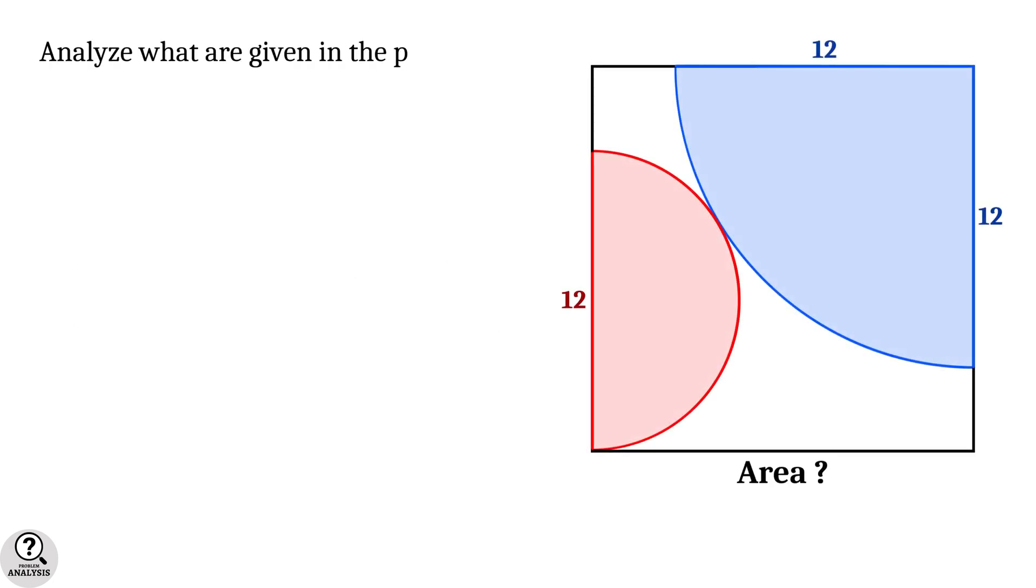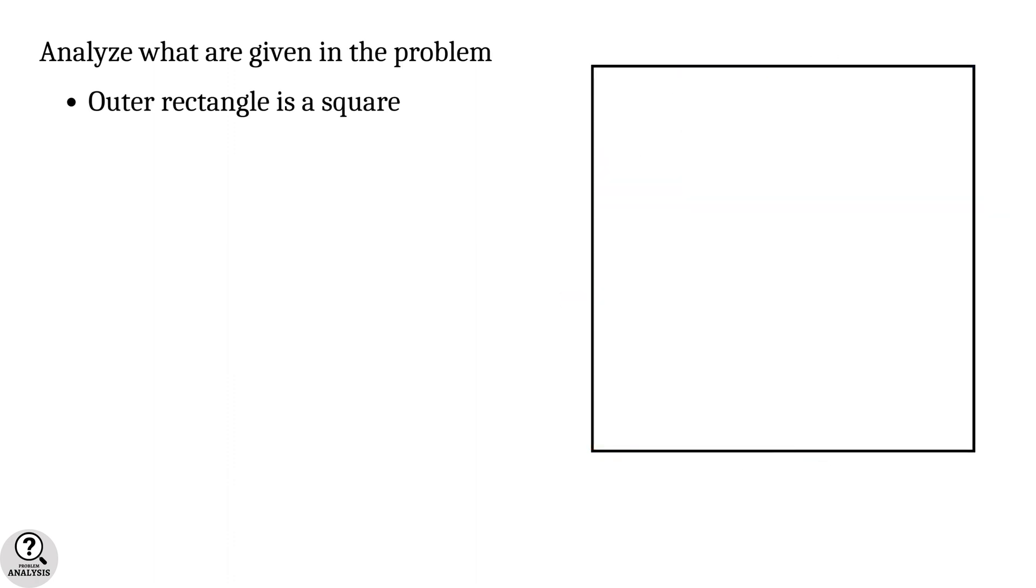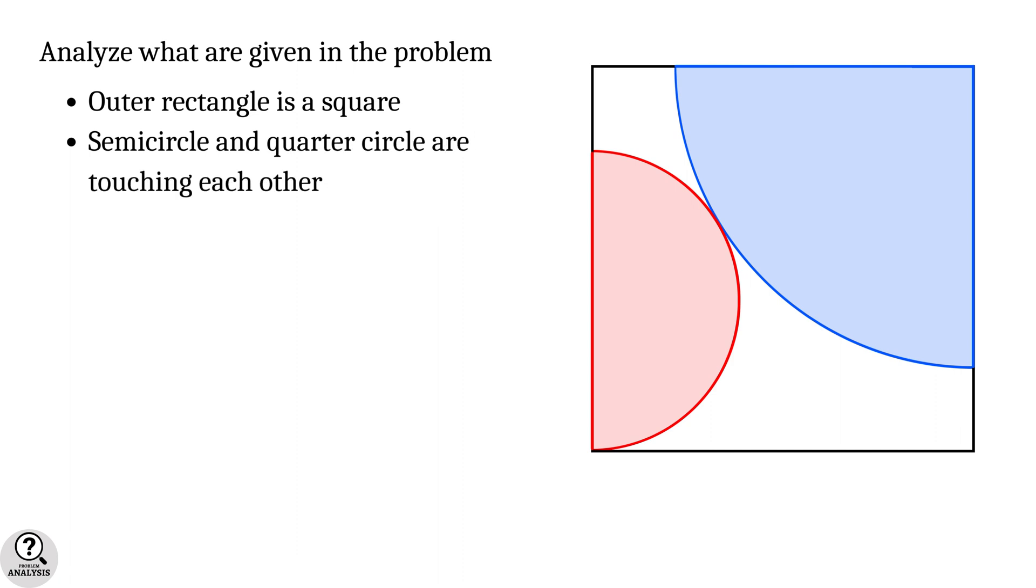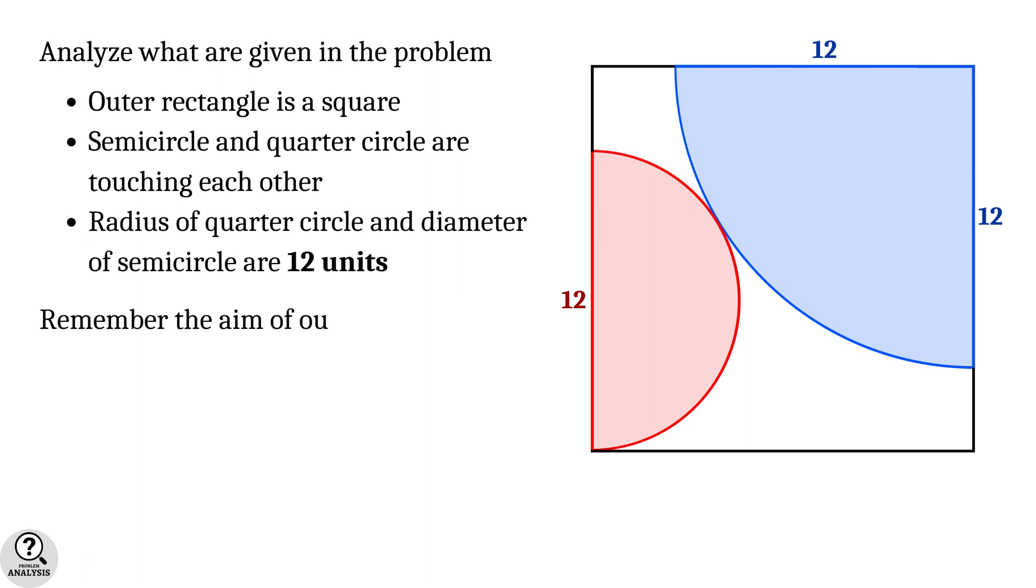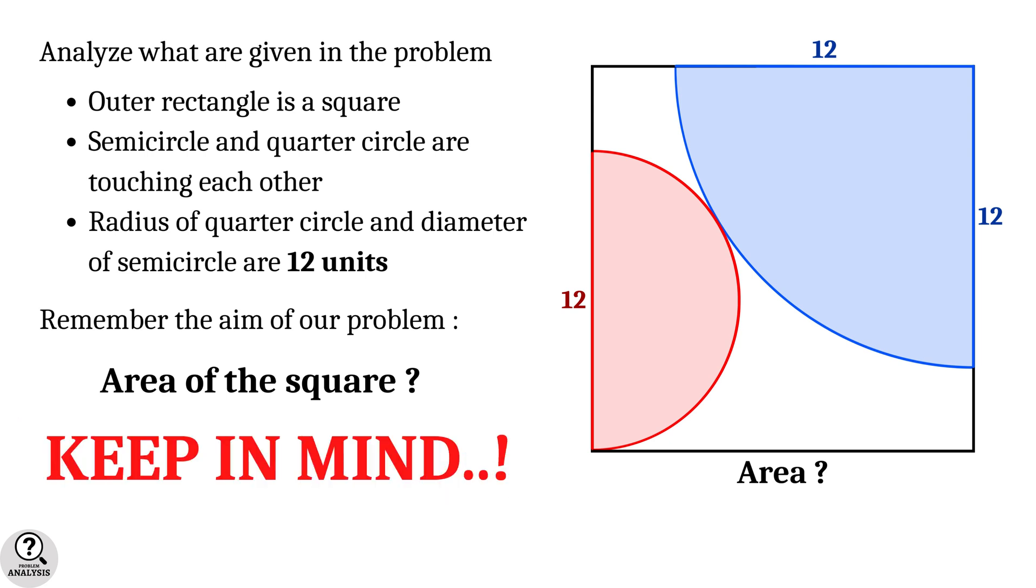First let's analyze what is given in the problem. The outer rectangle is a square. The semicircle and quarter circle are touching each other. The radius of the quarter circle and diameter of the semicircle are 12 units. Remember our aim is to find the area of the square. This is the structure of our problem, so always keep in mind.